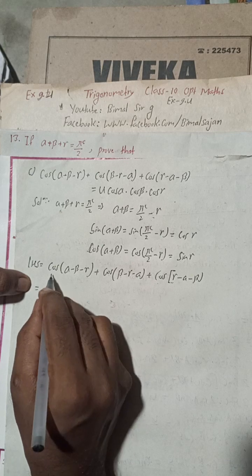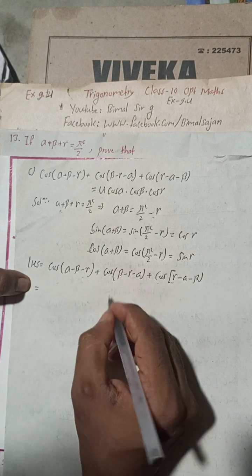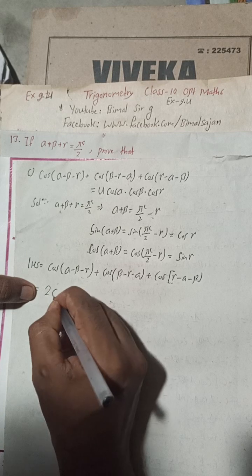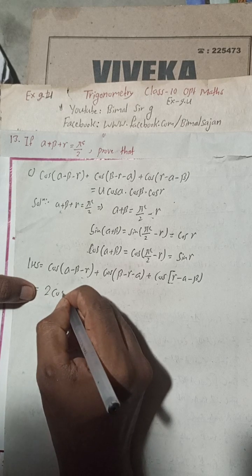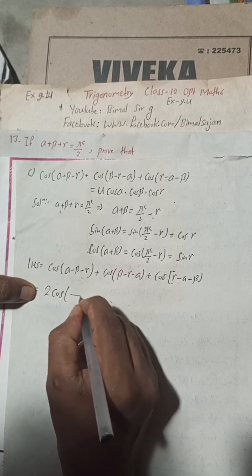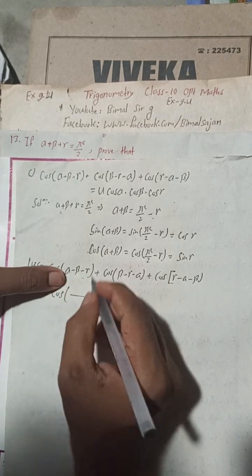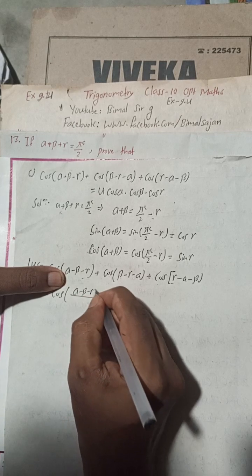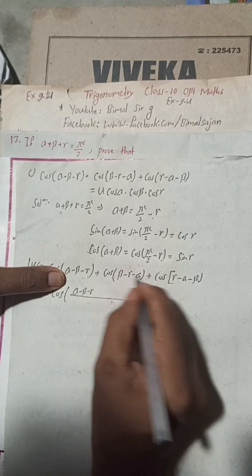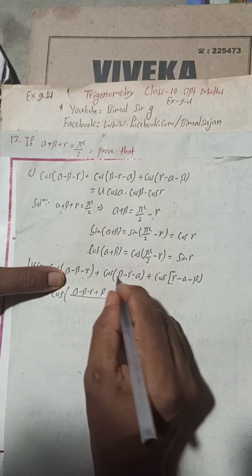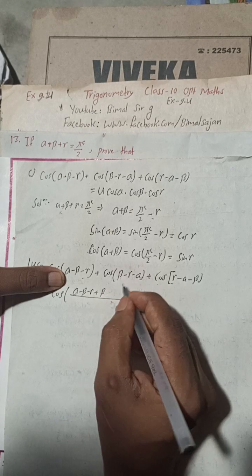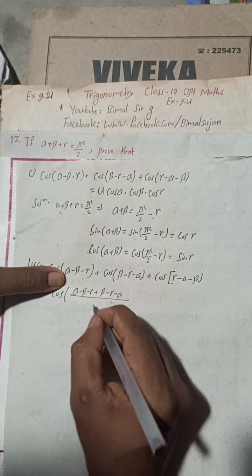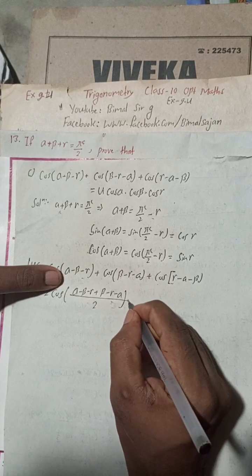I will apply the cos C plus cos D formula. Here C equals alpha minus beta minus gamma and D equals beta minus gamma minus alpha. Using cos C plus cos D equals 2 cos((C+D)/2) cos((C−D)/2), I compute C plus D, which groups all matching terms, divided by 2.